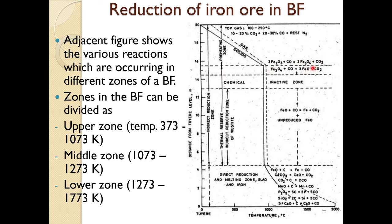Then magnetite is reduced to FeO in a sort of inactive zone in between. Indirect reduction takes place where FeO reacts with CO, the reducing gas, giving reduced iron oxide into iron and CO2. Stoichiometrically, the oxygen content varies from 0.95 to 1.05, so it is usually written as FeOx.